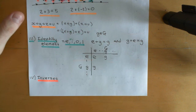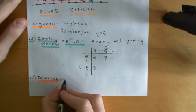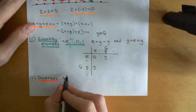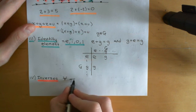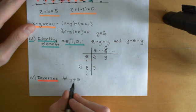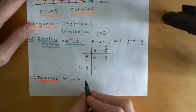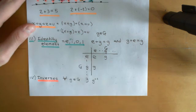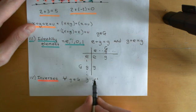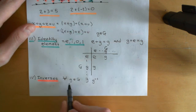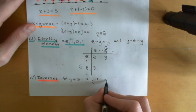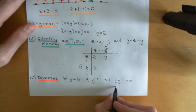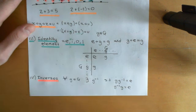Symbolically, the way that you would write this: for all little g that is an element of big G, there must exist another element which we'll call g inverse — the inverse of little g, written g to the power of negative one — such that g composed with g inverse is equal to the identity, and also g inverse composed with g the other way is equal to the identity.